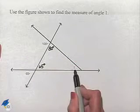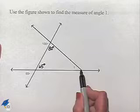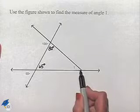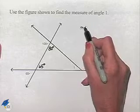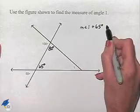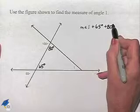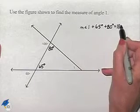And now, to find the measure of angle one, we use the fact that the sum of the three angles in a triangle has to equal 180 degrees. So if we take the measure of angle one plus the 65 degrees plus the 80 degrees, that must equal 180 degrees.